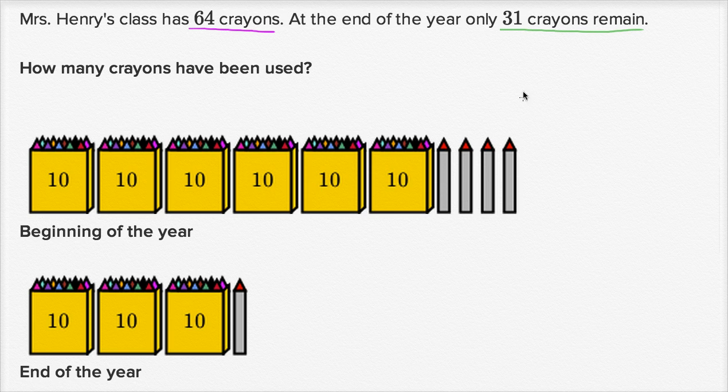And at the end of the year, only 31 crayons remain. Well, 31 is three tens and one one. Three tens, one ten, two tens, three tens, and one one. So how many have been used? Try to pause the video and try it on your own. All right, I assume you have tried it. Let's do it together.